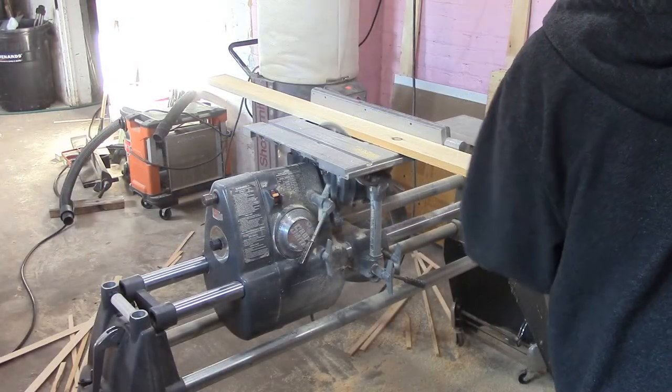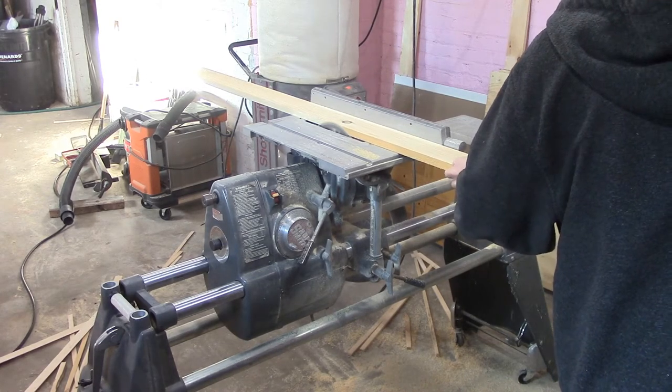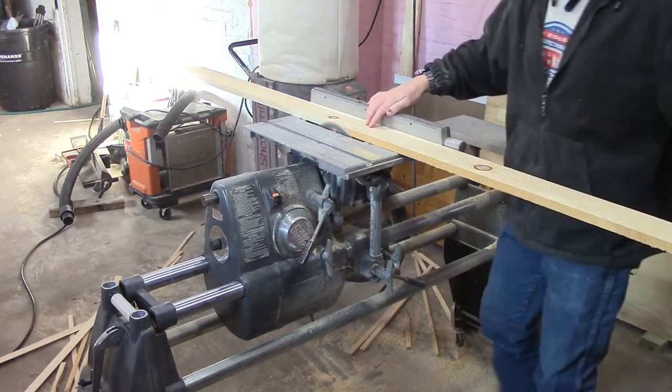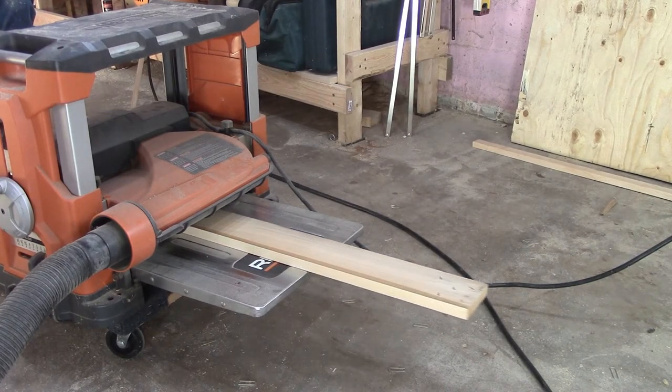To build the shelf, I ripped a scrap 7-ish foot 1x down to 3.5 inches wide. This will be used for the top. I cut another board right away to use for the sides so they'll be the exact same width. I ran all the boards through a planer to clean up the faces and make sure they were all the same thickness.